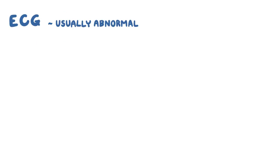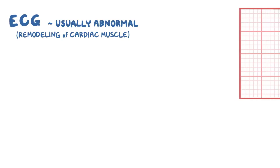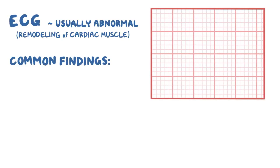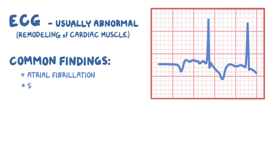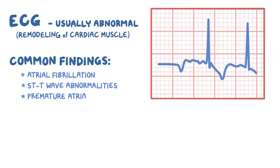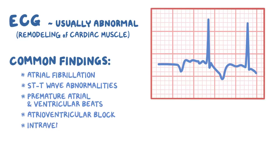ECG is usually abnormal in a variety of ways because there is significant remodeling of the cardiac muscle in all of the cardiomyopathies. Common findings include atrial fibrillation, ST and T wave abnormalities, premature atrial and ventricular beats, atrioventricular block, and intraventricular conduction delays.